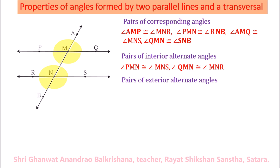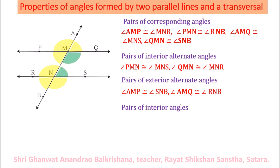The pairs of interior angles which are supplementary: angle PMN plus angle MNR equals 180 degrees, and angle QMN plus angle MNS equals 180 degrees.